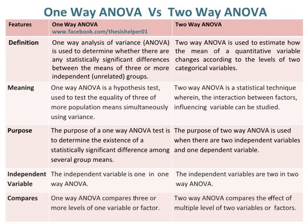The independent variable is one in one-way ANOVA, whereas the independent variables are two in two-way ANOVA. One-way ANOVA compares three or more levels of one variable or factor, whereas two-way ANOVA compares the effect of multiple levels of two variables or factors.